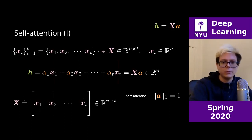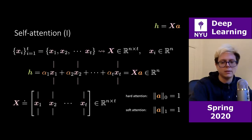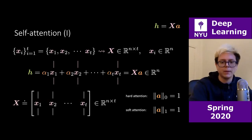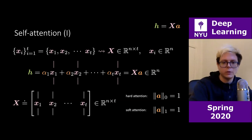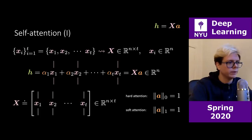In soft attention, the constraint is instead that the elements of a — the alphas — must sum to one. In this case, h is just a linear combination of the columns of the matrix capital X. That's the key difference between hard and soft attention.